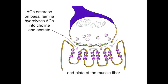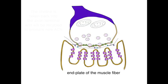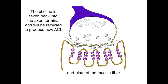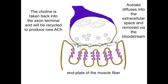The next thing that happens is that the acetylcholinesterase on the basal lamina hydrolyzes any acetylcholine in the cleft into choline and acetate. The choline is then taken back into the axon terminal and will be recycled to produce new acetylcholine. The acetate, however, diffuses into the extracellular space and is removed via the bloodstream.